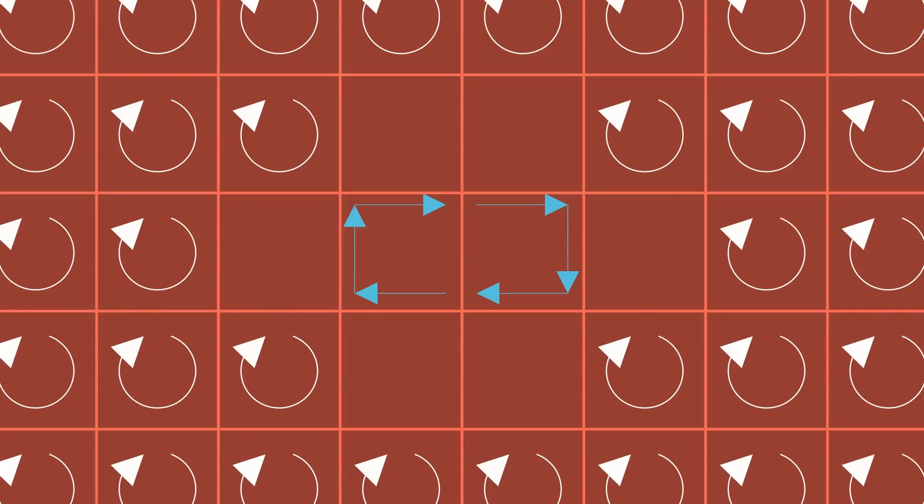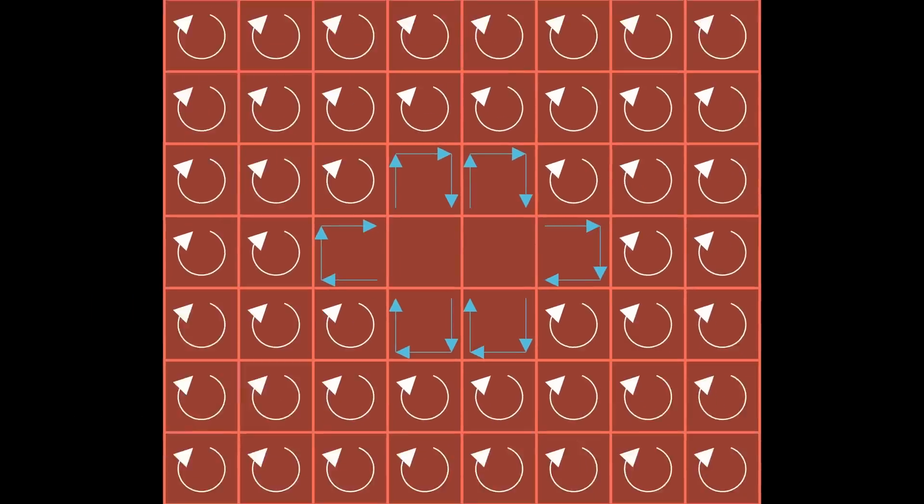But we can do this for every edge. On every edge where two squares border each other, we can cancel out the two vectors on either side because they don't contribute a net curl. What does this leave us with? Is the curl zero? No, we still have the very outer edge of the shape, where the edges of our little squares haven't been canceled out with each other, since they don't border anything.